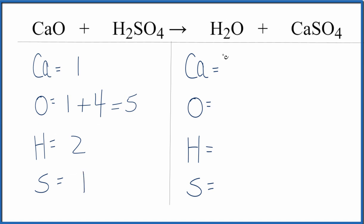Over on the product side, let's start with calcium. We have one of those. Oxygens, we have one. And again, don't forget that we have oxygens here in the other compound, so we have four. That gives us five oxygens. Hydrogens, two. Sulfurs, one.